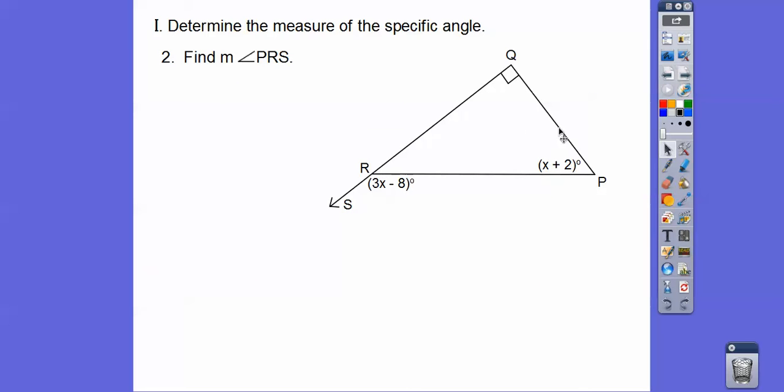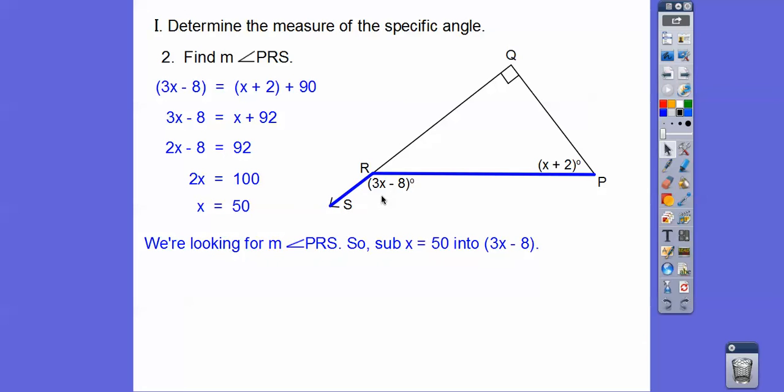It says find angle PRS. Here's an exterior angle. Here's the two remote interior angles. So the exterior angle is the sum of this one plus this one. That's 90 right there. So when we solve for x, we get x equals 50 on that. And then it says find the measure of angle PRS. PRS is that angle right there. So we're looking for plug in x equals 50 right there. So 3 times 50 is 150. 150 minus 8 is 142.